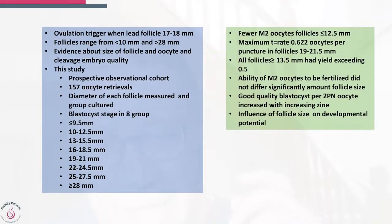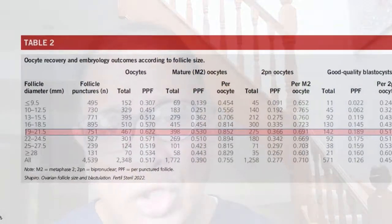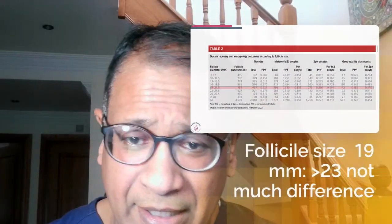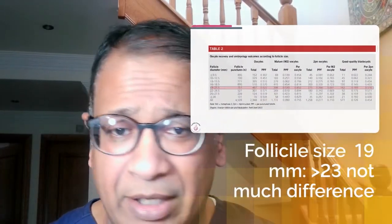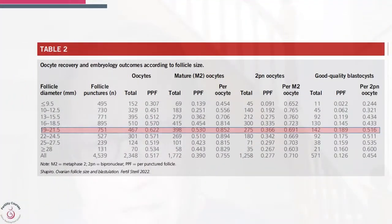It seems that increasing follicle diameter also had an impact on developmental potential. Looking at the study data, the best rate of getting oocytes and blastocysts appears to be between 19 and 21 millimeters. But notably, if follicle size increases beyond that, you do not see a substantial drop.